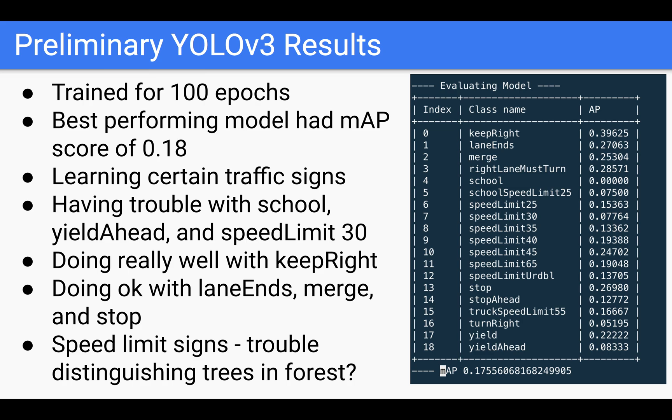And then finally, here's the preliminary results for YOLO V3, which I've trained one single model with a hundred epochs. And the best performing model had a mean average precision of 0.18, which is equivalent to like an F1 score. The interesting thing to note here is that for keep right, YOLO actually had an average precision of 0.4. This is interesting because if you compare and contrast this with the Faster RCNN model, it actually did not know how to detect keep right at all.